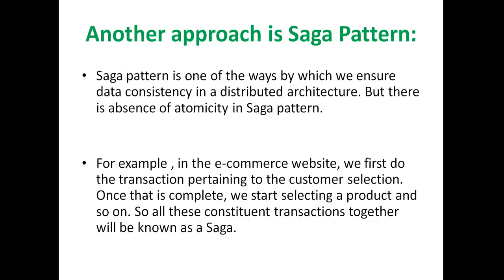Next is the saga pattern. Saga pattern is one of the ways by which we ensure data consistency in a distributed architecture, but there is an absence of atomicity in the saga pattern. For example, in an e-commerce website, we first handle the transaction pertaining to the customer selection; once that is complete, we start selecting a product, and so on. All these constituent transactions together are known as a saga — all the services perform their operations independently, raise some events, those events are received by other services, they perform their operations and raise other events. This is how the saga pattern works.